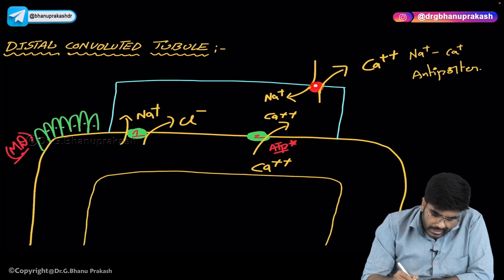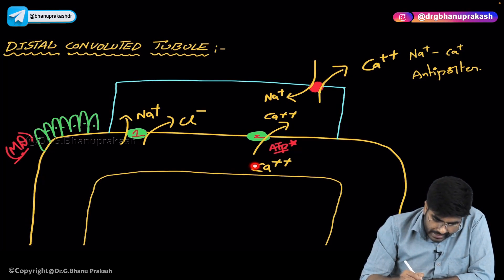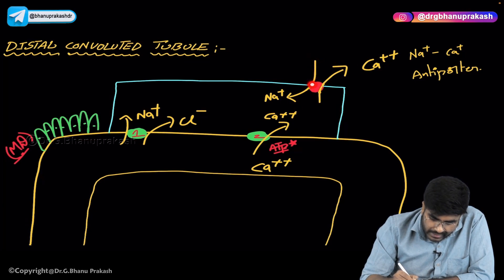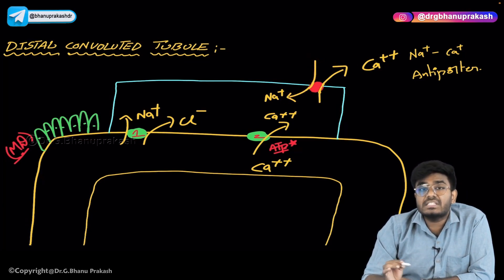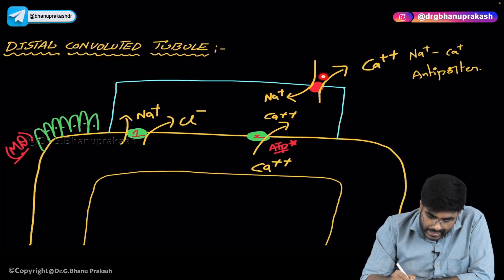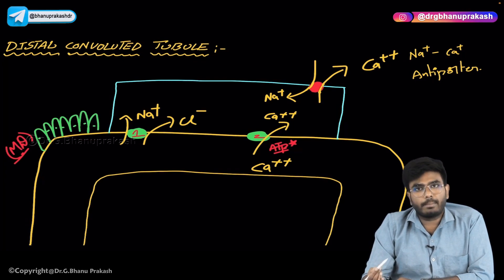The third transporter exchanges calcium for sodium. Whatever calcium is being reabsorbed into the cell needs to go into the blood, and for every calcium, sodium is being taken into the cell. So this is an exchanger or antiporter — a sodium-calcium antiporter — present on the basolateral membrane.